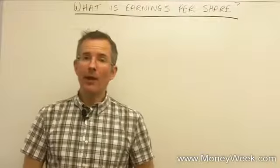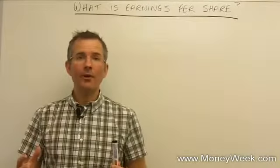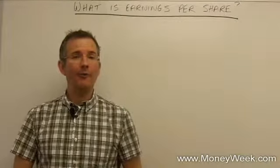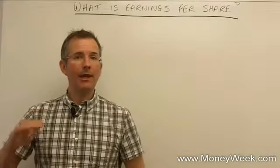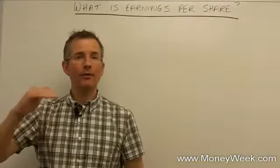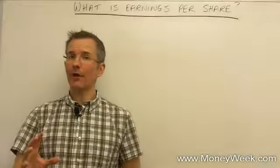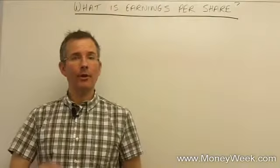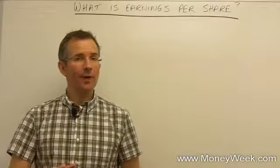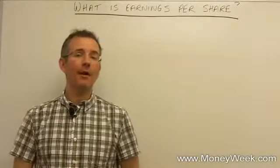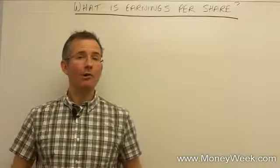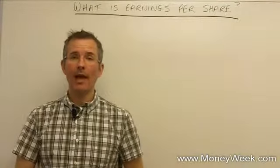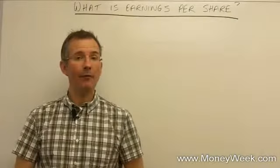So what is earnings per share? In essence, it does what it says on the tin. It's also known as EPS. It is one year's earnings — that's profit after tax. We're not going to be taking away dividends, simply because the directors make a decision about how they distribute profits after tax. Either they pay out a dividend or they don't, but that doesn't influence the earnings for the year. So we take profit after tax and divide by the number of ordinary shares — voting shares — in issue. That gives us EPS, or earnings per share, in its basic form.